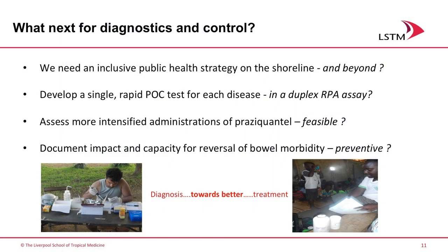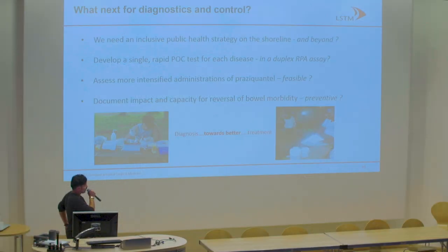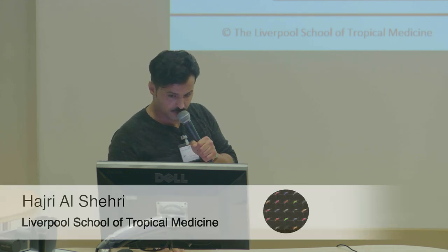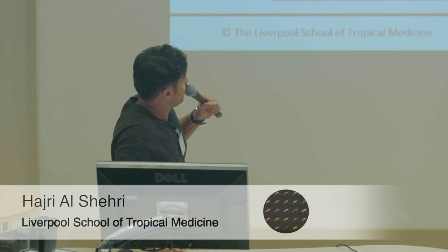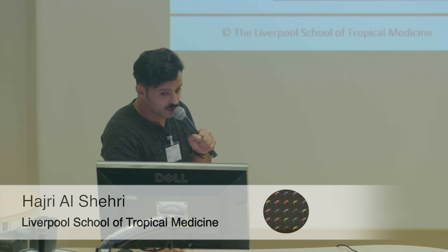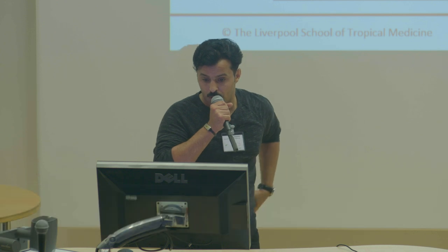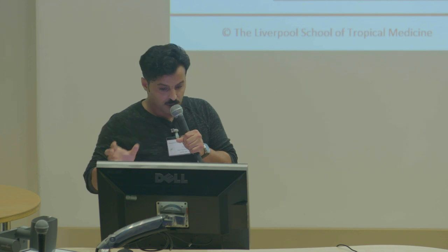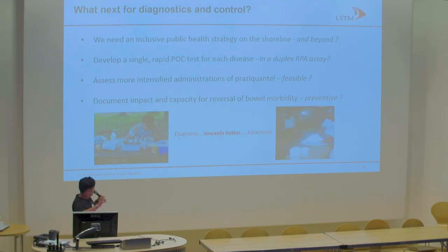What we need in the future: we need to develop a public health strategy for the shorelines; we need to develop a point-of-care test based on molecular detection, like RPA — recombinase polymerase amplification — as we and Dr. Amaya and other team members did for Giardia last year, which is a promising tool. We need to scale up consequential treatment in the shorelines, and we also need to document morbidity for schistosomiasis — all of this to bring diagnostics and treatment together.